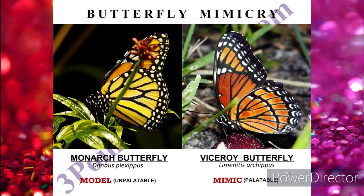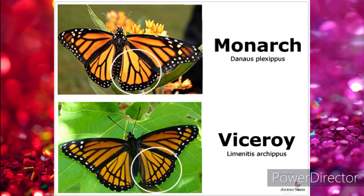For the next year he tried the theory that viceroy butterflies copy monarchs. He put forward the idea that viceroy butterflies look exactly like monarchs because monarchs do not taste good to birds. Birds like to eat viceroys, so the more a viceroy looked like a monarch, the less likely it was to be eaten by a bird — and that is why viceroy butterflies copy monarch butterflies.